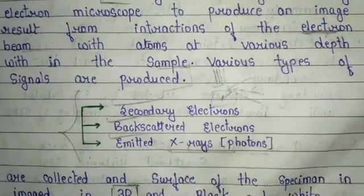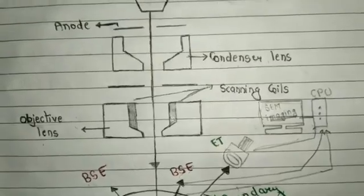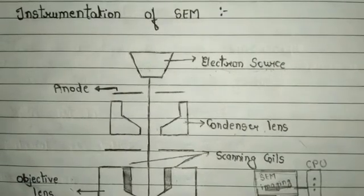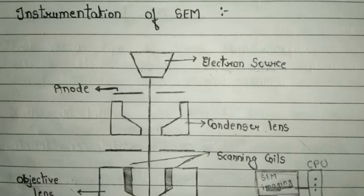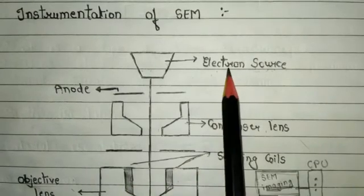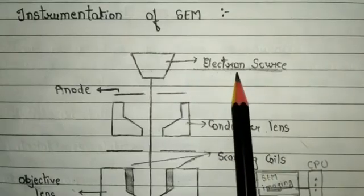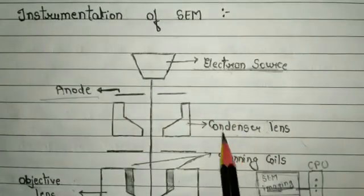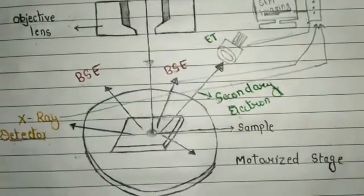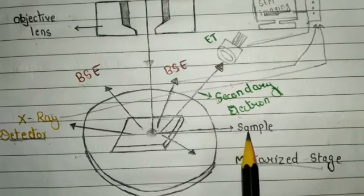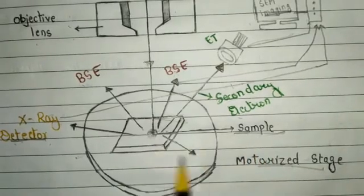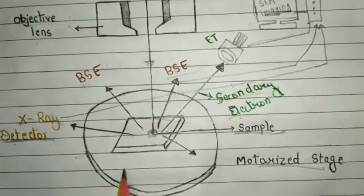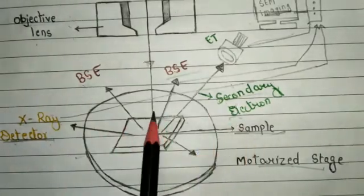The instrumentation part of the scanning electron microscope is very important. We need to know about every single part of the instrument. The components are: electron source, electron beam, anode, condenser lens, objective lens, scanning coil, and a motorized stage in which we place the sample specimen. There are also secondary electron, backscattered electron, and X-ray detectors. All these signals are obtained after the electron beam is bombarded onto the sample.